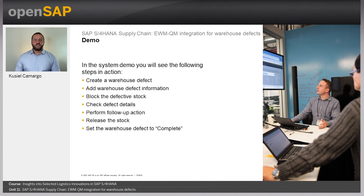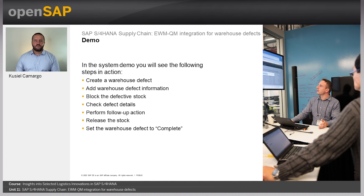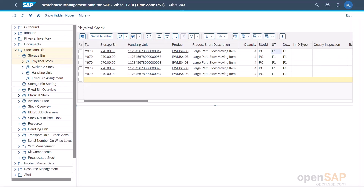So let's take a look into the system to see an example of how to manage a Warehouse Defect in SAP S/4HANA. In the demo you will see the following: how to create a Warehouse Defect to add warehouse defect information and to block the defective stock; how we can check defect details, perform follow-up actions, and release the stock; and finally, how to set the Warehouse Defect to complete. Before we start the Warehouse Defect flow, let's open in parallel the Warehouse Monitor app to visualize the stock situation of the first handling unit, Final 49.